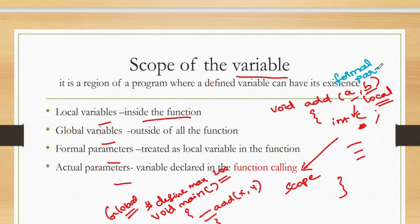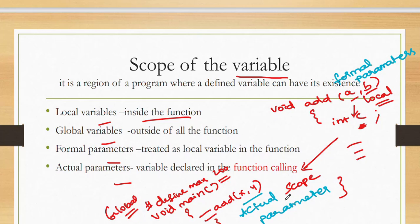Formal parameters are able to access only inside the function. And actual parameters — whatever you are declaring here — these are actual parameters. Actual parameter variables are normally declared in the function calling. Whatever in the main function you define as actual parameters. So local variable is nothing but inside the function; global variable is outside of all the functions where you can access the variables; formal parameters are treated as a local variable in the function definition; and actual parameters are variables declared in the function calling. That is called the scope of the variable.